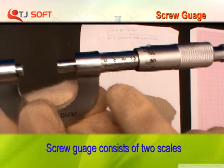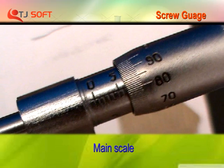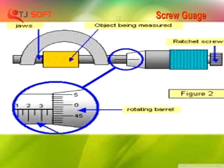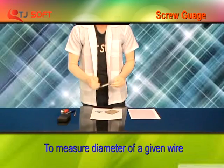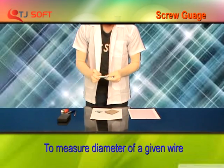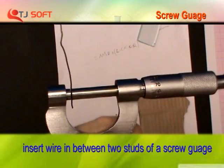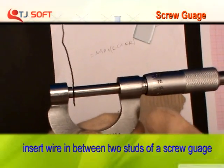Screw gauge consists of two scales: main scale and circular scale. Now we are going to measure diameter of a given wire. Insert the wire in between the two studs of a screw gauge.